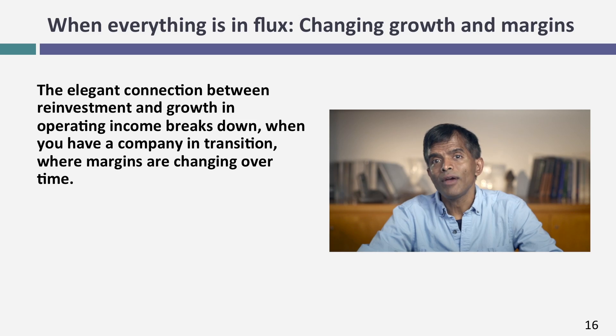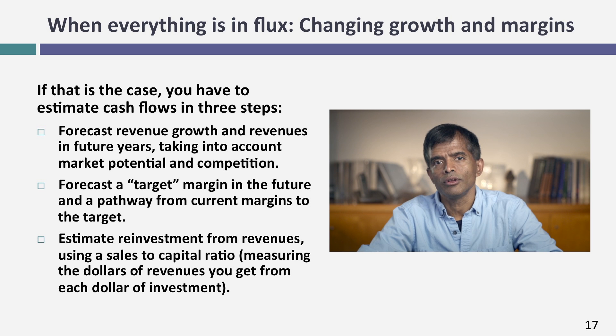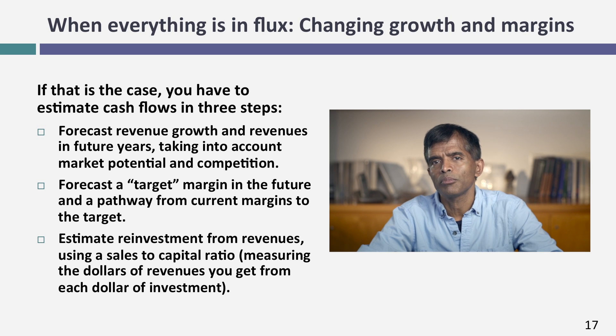The approaches just described — growth equals reinvestment rate times return on capital, or retention ratio times return on equity — work only if you have stable return on equity and return on capital. If margins and accounting returns are changing, don't use these approaches. For a shifting company where revenue growth, margins, and returns on capital are all changing, I suggest approaching valuation in three steps: first, project the top line by estimating revenue growth; second, estimate your margins over time, which can go up or down; third, estimate what you will reinvest using a sales-to-invested-capital ratio. The first step gives revenues, the second gives operating income, and the third gives free cash flow to the firm.